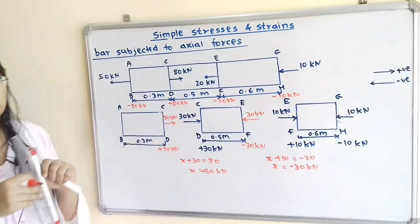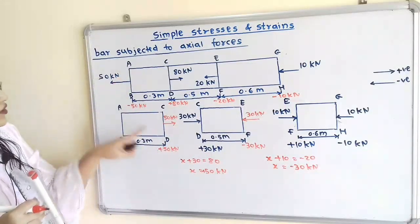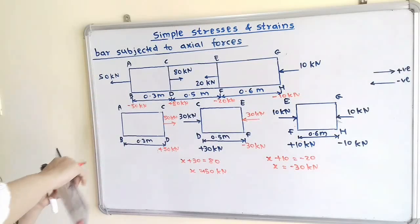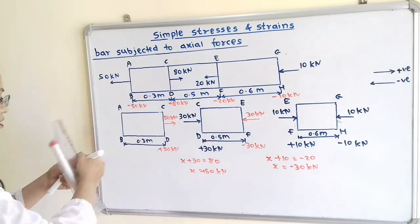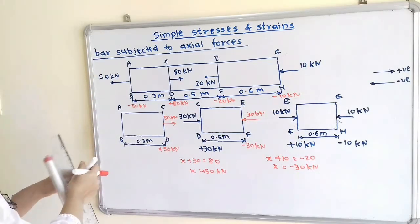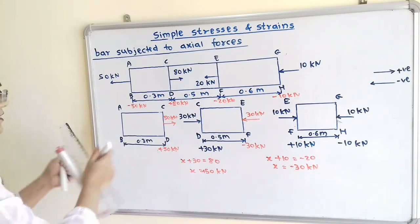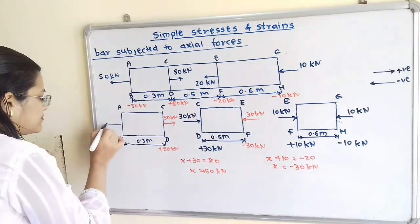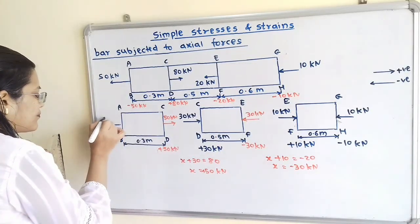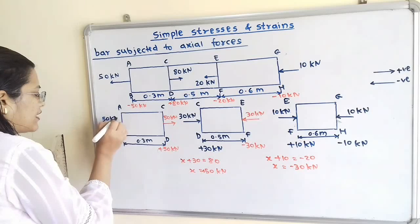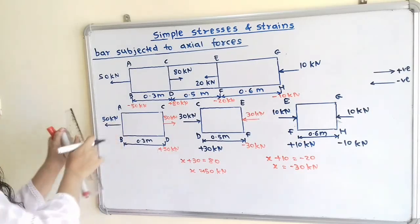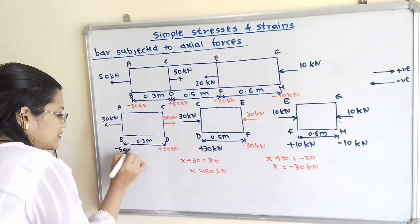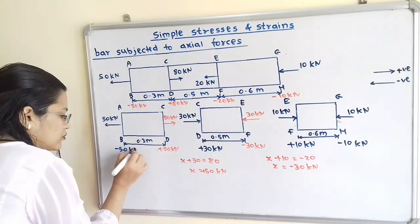If we observe in the question, to balance this 50 kN, there is 50 kN in the opposite direction. So we show it as is — direction towards the left hand side, magnitude minus 50 kN.